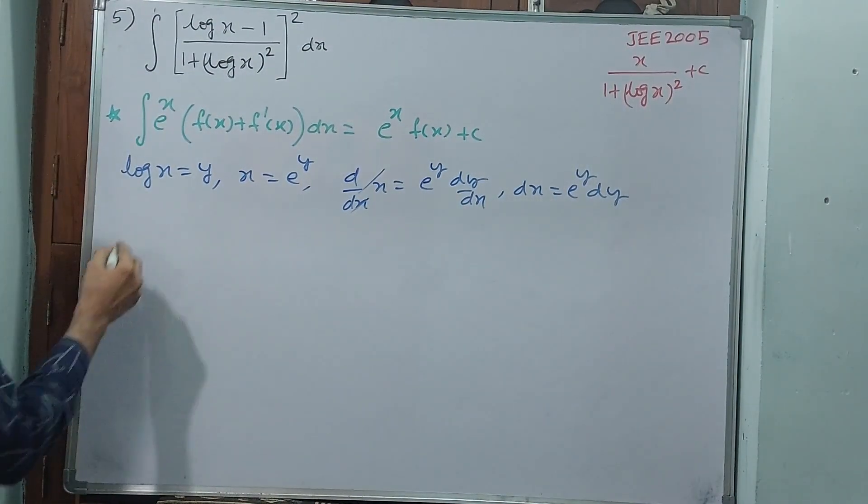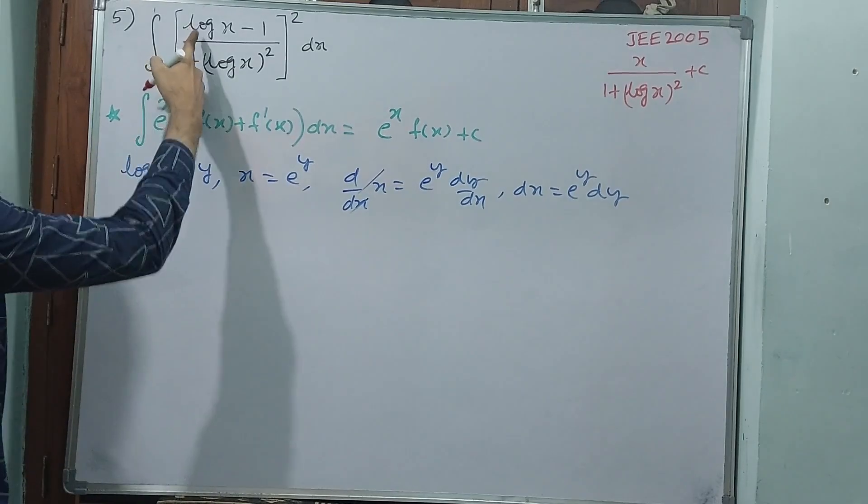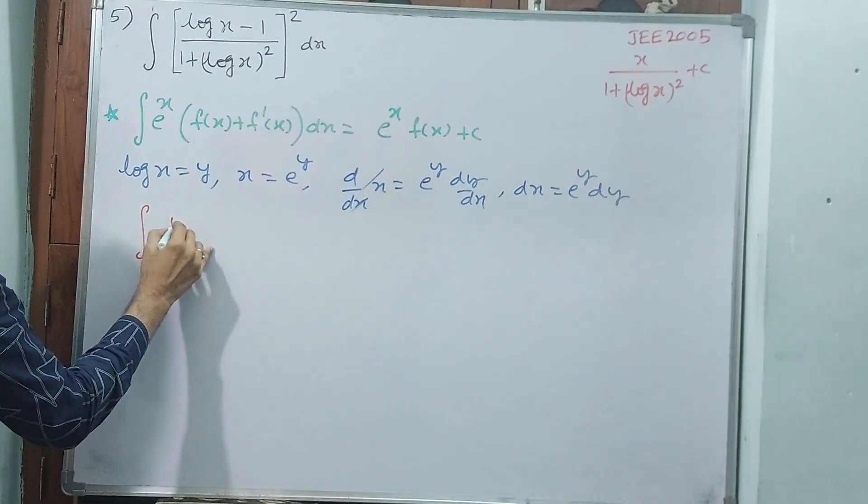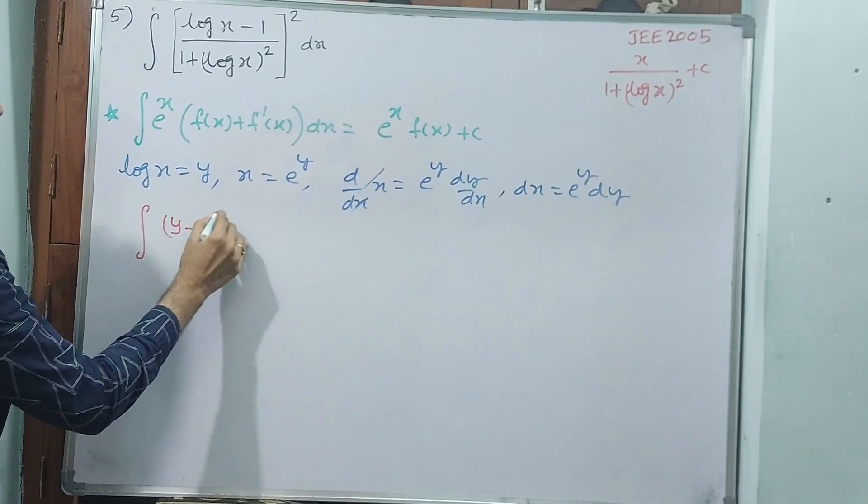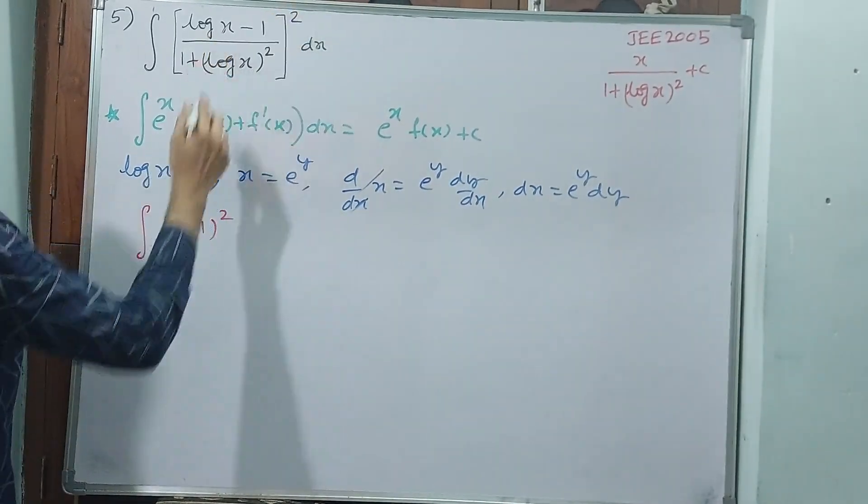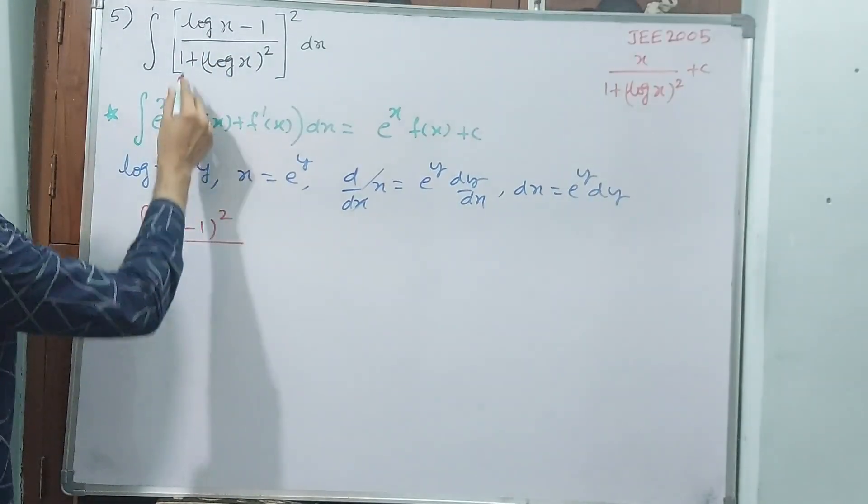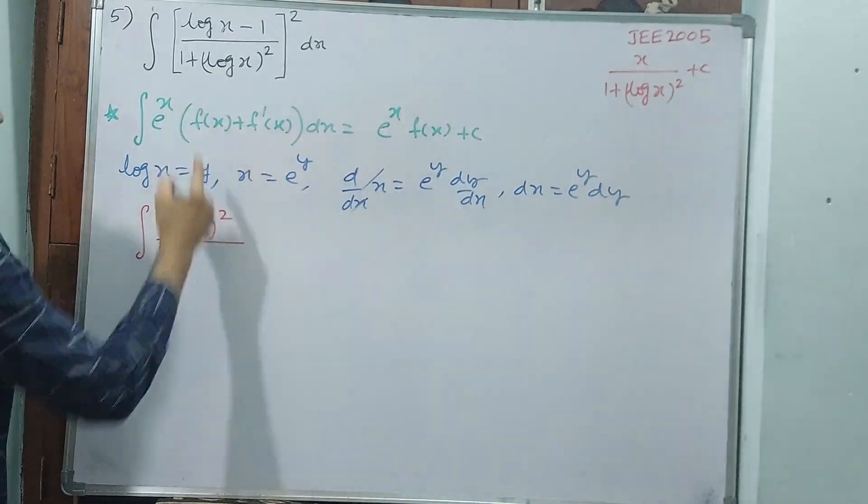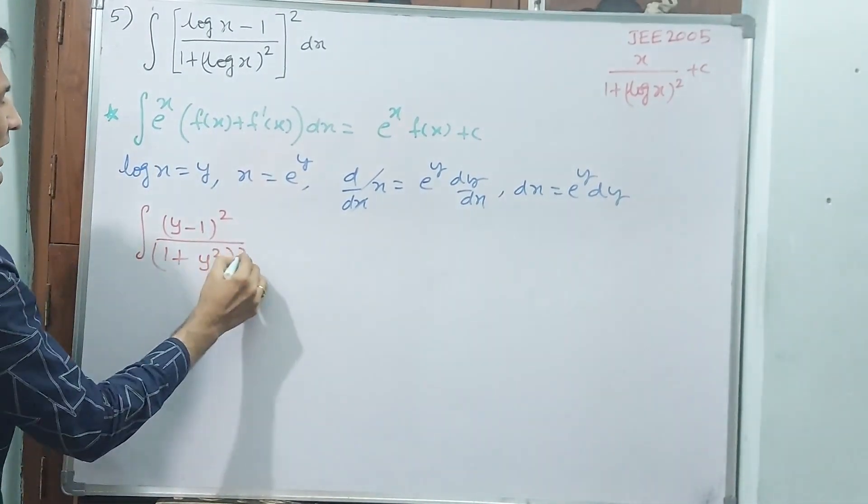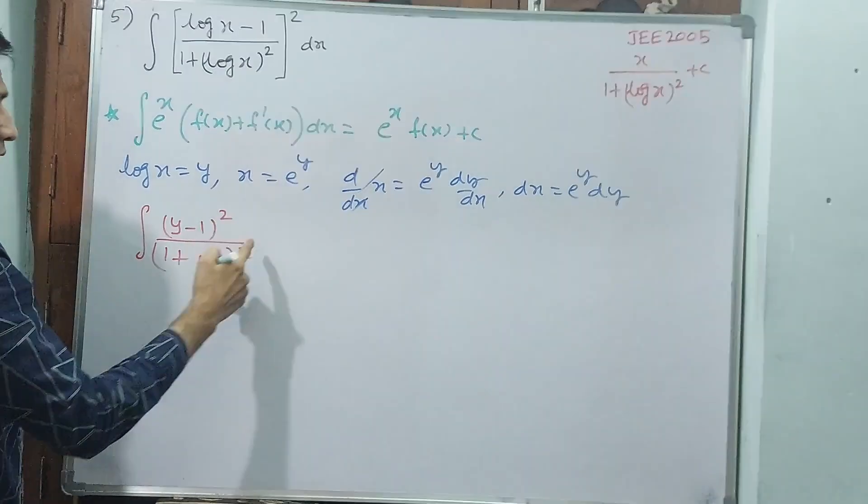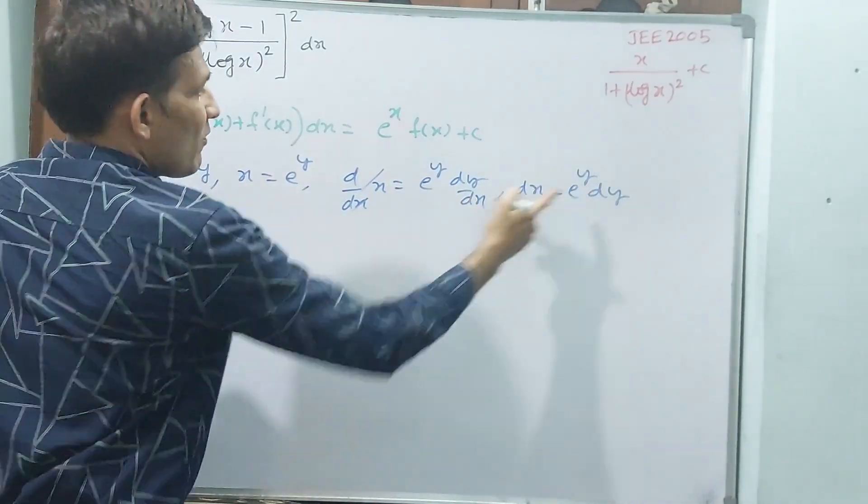Now, rewrite this starting here. Integral log x you have to write as y: y minus 1 whole square by—this square is for numerator and denominator both—1 plus y whole square. dx I am writing e power y dy.